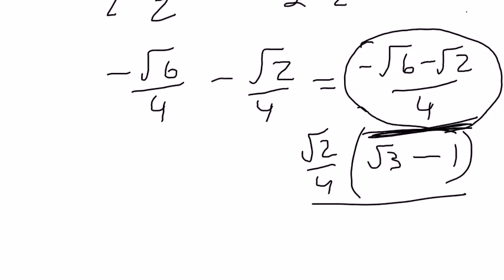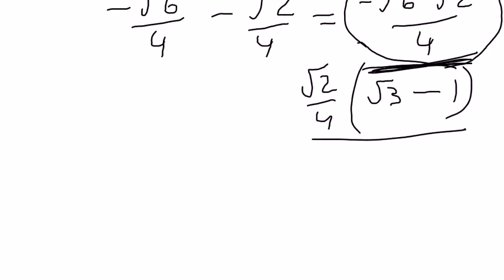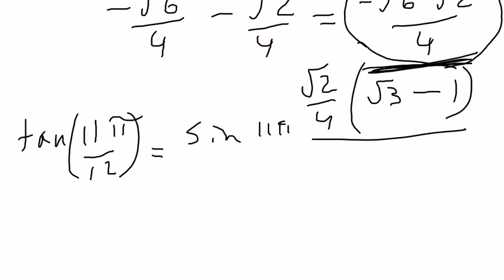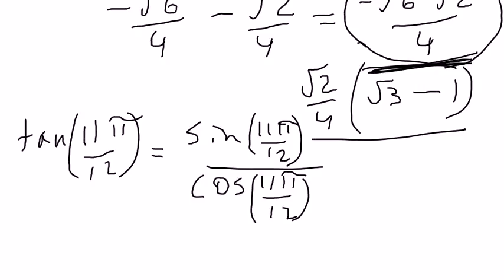Now we need to use these two answers to find tangent. Tangent of 11π over 12, if we remember from chapter 5, should equal sine of 11π over 12 divided by cosine of 11π over 12.